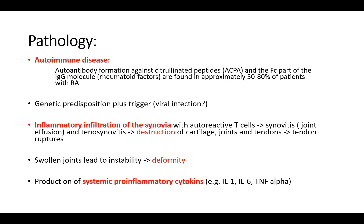You will see inflammatory infiltration of the synovia with autoreactive T cells, which will lead to a synovitis that can be seen by a joint effusion. There is also a tenosynovitis, which leads to the destruction of cartilage, joints, and tendons, which can lead to tendon rupture. The swollen joints lead to instability, and the instability of the joint will lead to deformity, which usually has a typical picture.